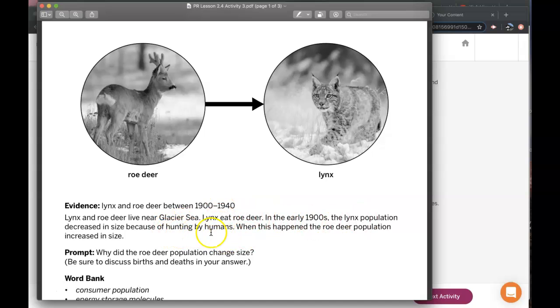The lynx population decreases because of hunting. We have fewer lynx eating roe deer, so the roe deer population increases because there are fewer predators, so there are more roe deer.